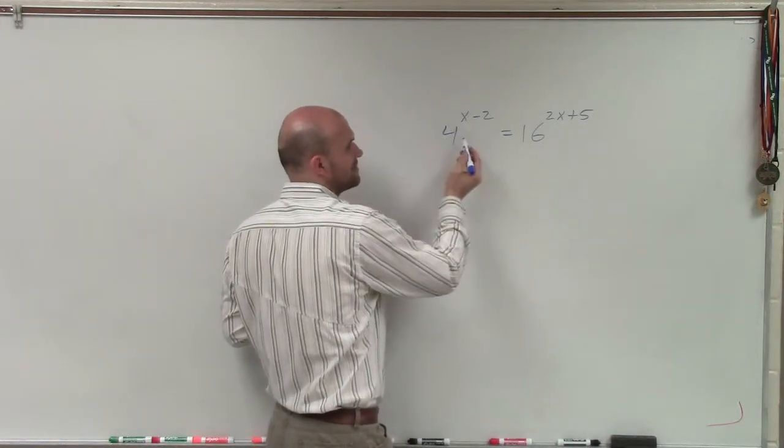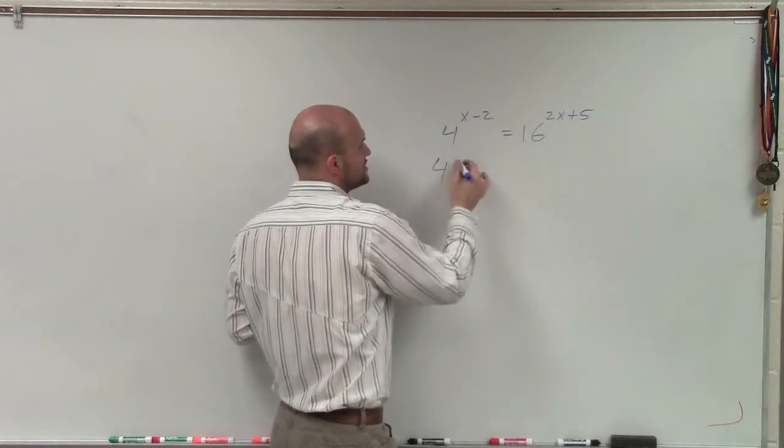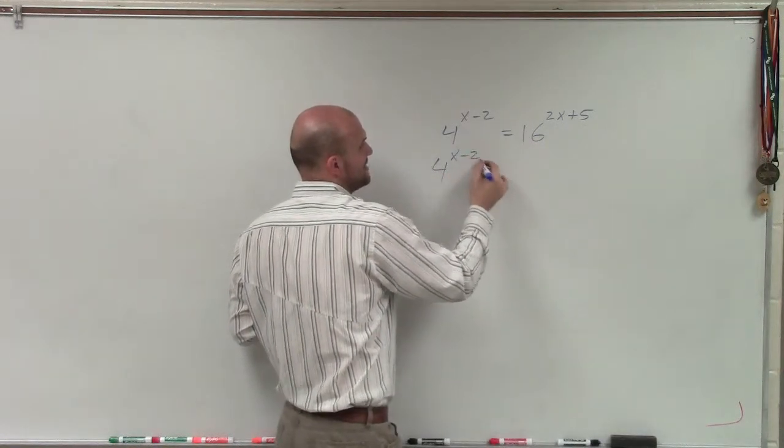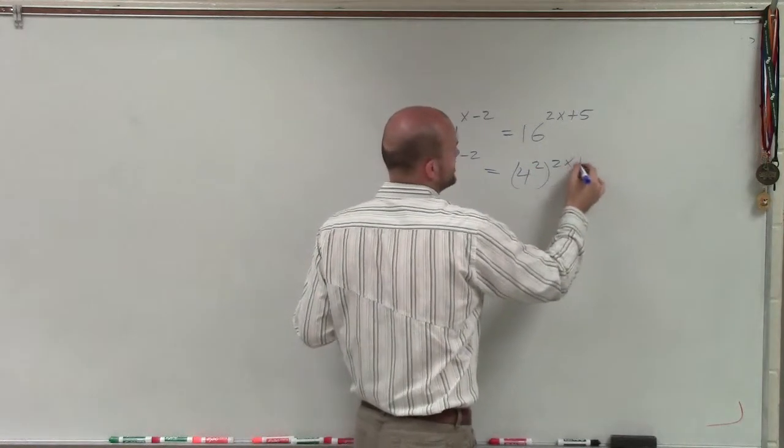And obviously, base 4, I can leave that as base 4, but I can rewrite 16 as 4 squared. So I can rewrite this as 4 to the x minus 2 equals 4 squared times 2x plus 5.